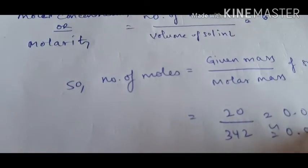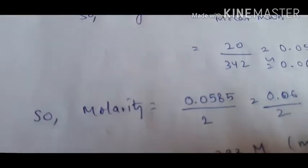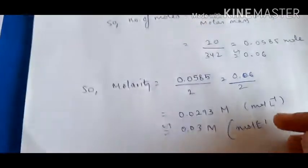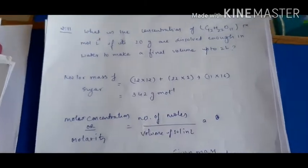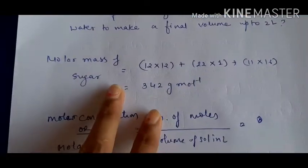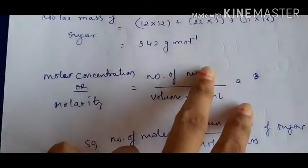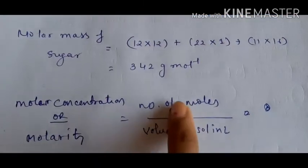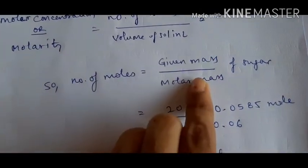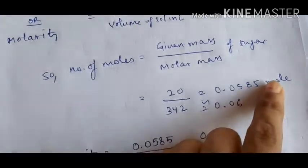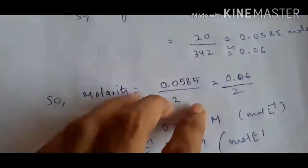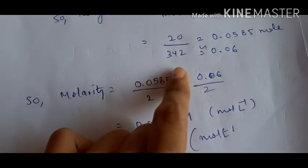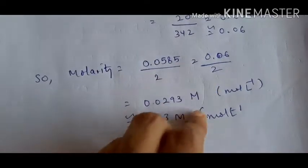Using 0.06 as the rounded number of moles, molarity = 0.06 / 2 ≈ 0.03 mol/L. To recap question eleven: first find molar mass, then find number of moles using given mass / molar mass (= 0.0585 ≈ 0.06), then divide by volume in litres. The unit is mole per litre, also written as capital M.